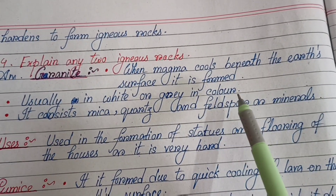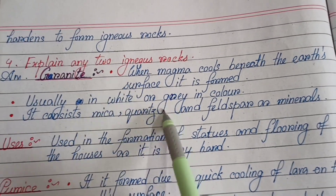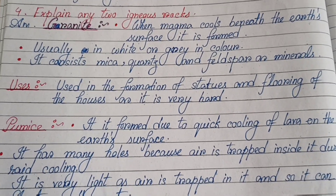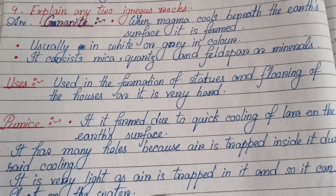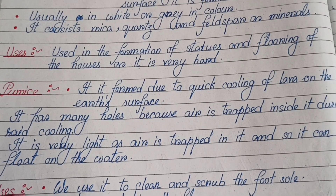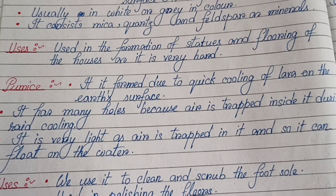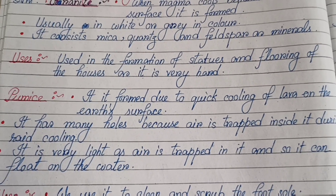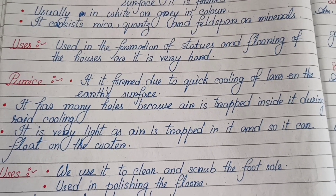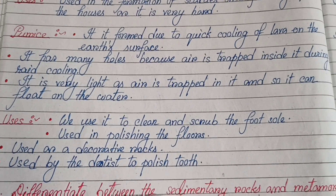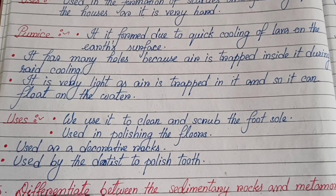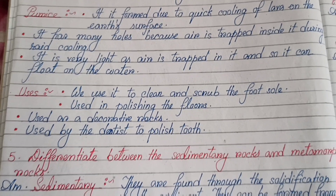Number four: Explain any two igneous rocks. Granite — when magma cools beneath the Earth's surface it is formed, usually in white or gray color. It consists of mica, quartz and feldspar as minerals. Uses: used in the formation of statues and flooring of houses as it is very hard. Pumice — it is formed due to quick cooling of lava on the Earth's surface. It has many holes because air is trapped inside during rapid cooling. It is very light and can float on water. Uses: clean and scrub the foot sole, polish floors, used as decorative rocks, used by the dentist to polish teeth.